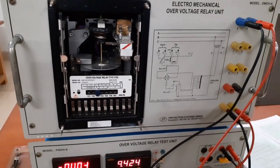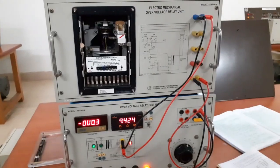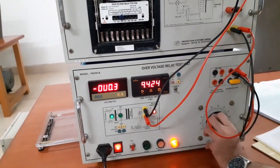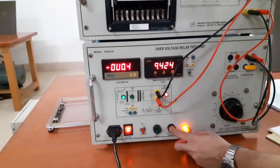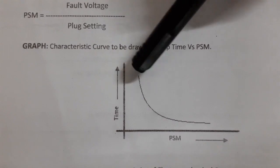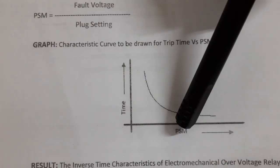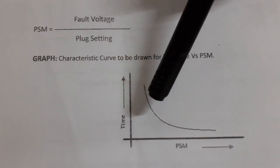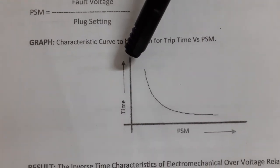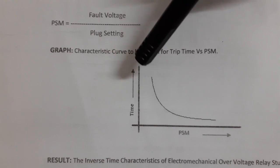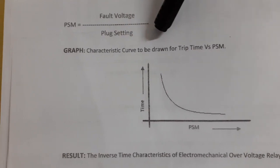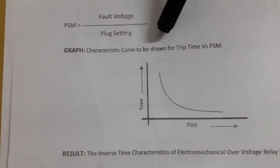Repeat the similar steps for other readings. Turn off the system: first return the dimmer stat to zero, click reset, return to set mode, then turn off the main supply. Finally, you will be able to get a graph of time versus PSM. From this graph, we understand that for a high fault voltage the tripping time is very less — it activates very quickly. On the other hand, if the fault voltage is very low, it takes a lot of time to trip.